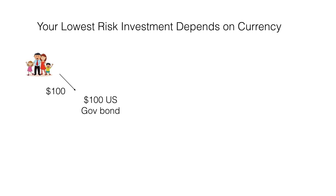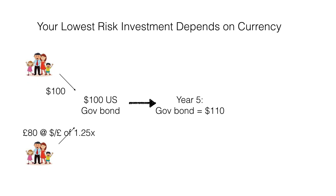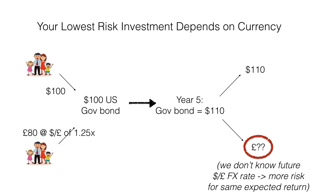Let's suppose you have an investor who has $100, for which he buys a US government bond. Compare that to a UK investor who has £80 and at a dollar-sterling conversion of 1.25 buys the same $100 US government bond. Now let's go five years into the future — you get $110 back for that government bond, which has appreciated in value with interest. The $110 will always be $110 for the US investor, but we don't know the pound value of the $110. So from the perspective of the sterling-based investor, he is taking more risk for the same expected return because we don't know the future dollar-sterling exchange rate.